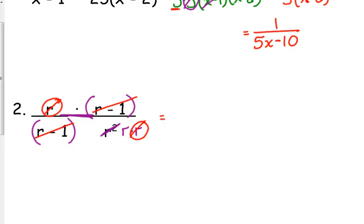I can cancel the r minus 1s. So again, everything in the numerator canceled, so I've got to put a 1 in its place. The only thing I have left in the denominator is a single r. And that's it.